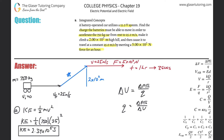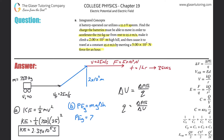Part B: the car climbs the hill at constant speed, so kinetic energy isn't changing — only gravitational potential energy changes. The change in gravitational PE is: ΔPE = mgh = 750 × 9.8 × 200, which equals approximately 1.47×10⁶ joules. That's the energy required for the hill-climbing phase.